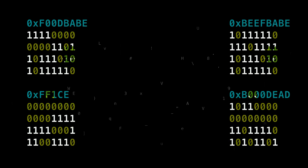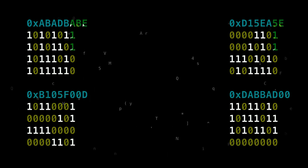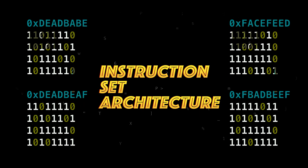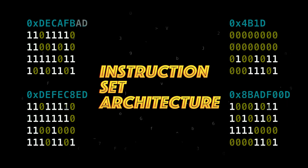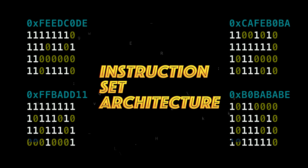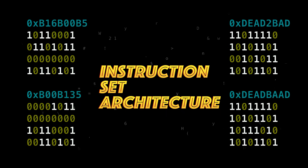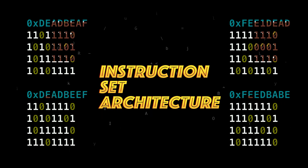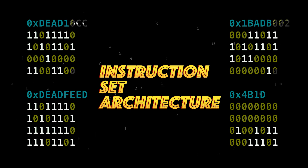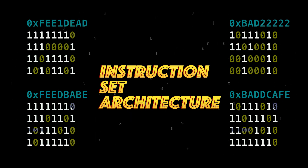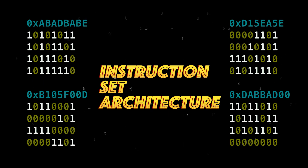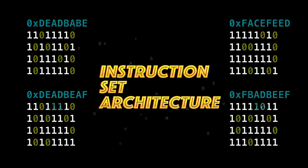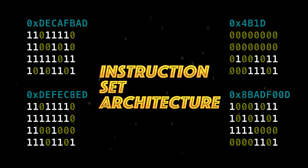Which specific operations can a CPU perform? These are written in the instruction set architecture. The instruction set is pretty straightforward — a collection of instructions. When we talk about processors, architecture means what the CPU can provide: the services the CPU allows us to use. For example, the CPU allows for multiplication, jumps, or compares — when we say architecture, we imply the things that we can do with that CPU.